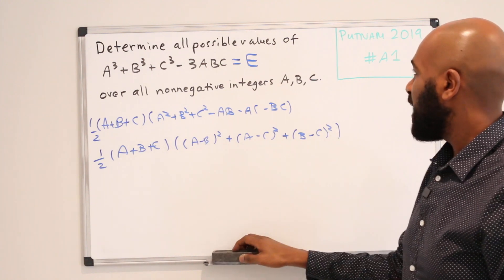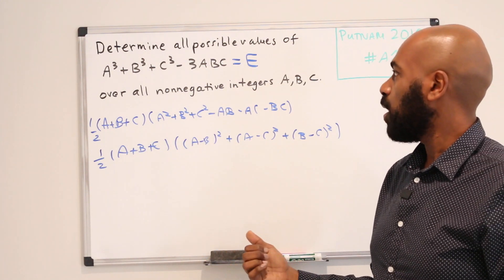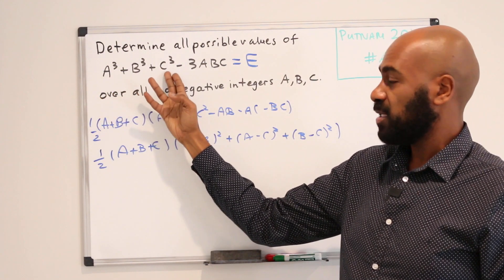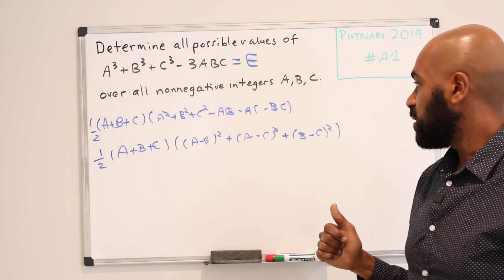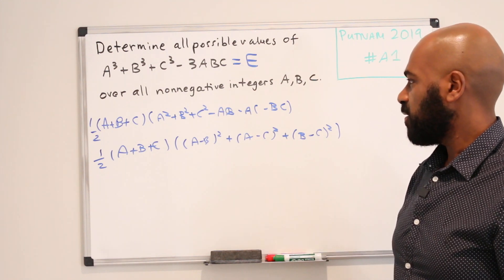We could have actually figured that out in a different way. If you happen to know the arithmetic geometric mean inequality, that's a way to show that the sum of these things divided by 3 has to be at least ABC, and so E is non-negative. But here's another way to see that this expression E has to be non-negative.